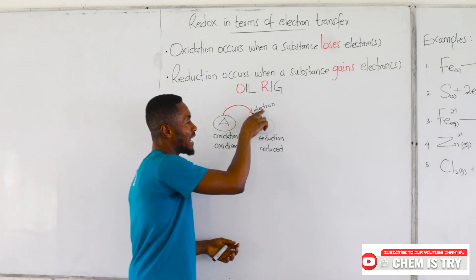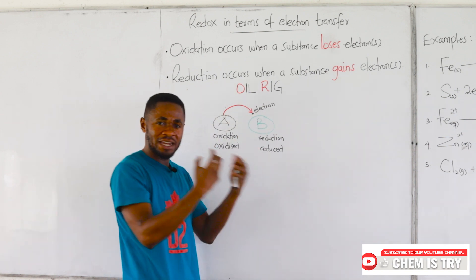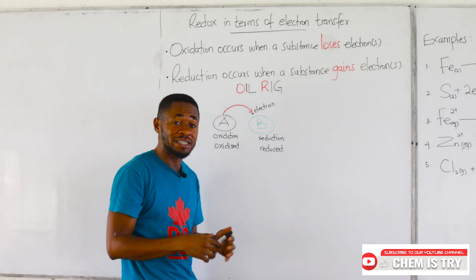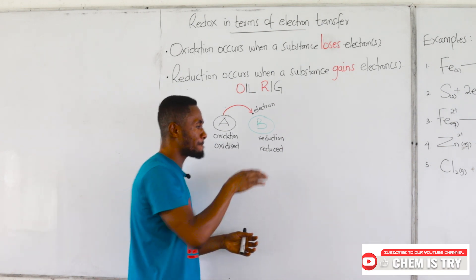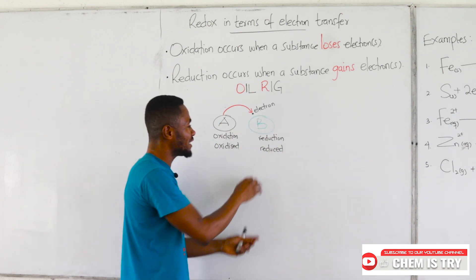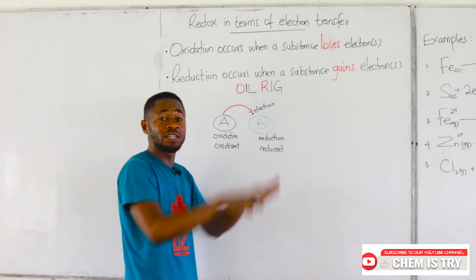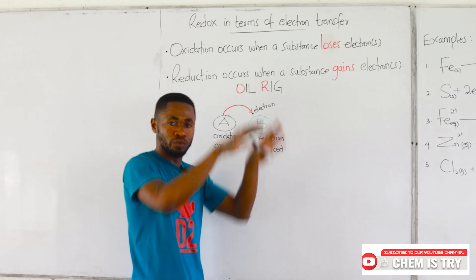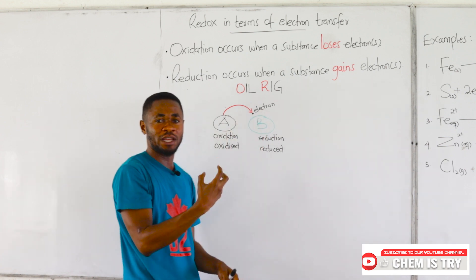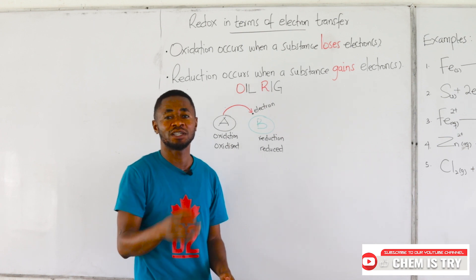The thing we need to remember is that an electron is negatively charged. So when you gain electrons, you are gaining negatives, not positives. Imagine writing a test and getting a lot of minuses — what happens to your overall score? It reduces. So since a substance is gaining electrons and electrons are negatively charged, that substance is going to be reduced. That is the reason why we use the word reduction for the gaining of electrons.